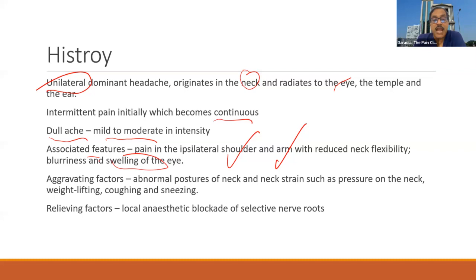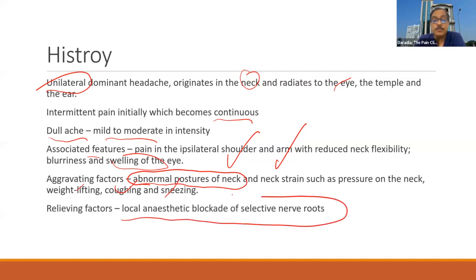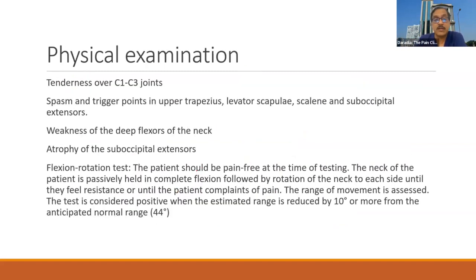The aggravating factors: abnormal posture of the neck is very important; neck movement causes and aggravates the pain. Sometimes coughing, sneezing, or weightlifting also aggravate it. Relieving factors: NSAIDs may help. Very importantly — and this is also diagnostic — local anesthetic blockade of the selective nerve or structure, such as a medial branch block for the facet joint. That is both the relieving factor and a diagnostic tool.